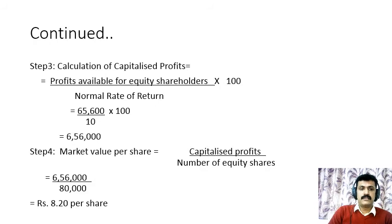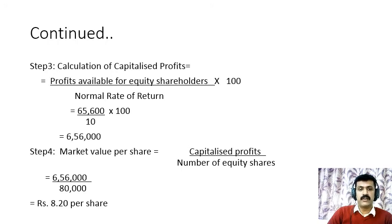Step 3: Capitalized profits = Profits available for equity shareholders ÷ Normal Rate of Return × 100. Profits available = ₹65,600; normal rate of return = 10%. Therefore, capitalized profits = ₹65,600 ÷ 10 × 100 = ₹6,56,000.